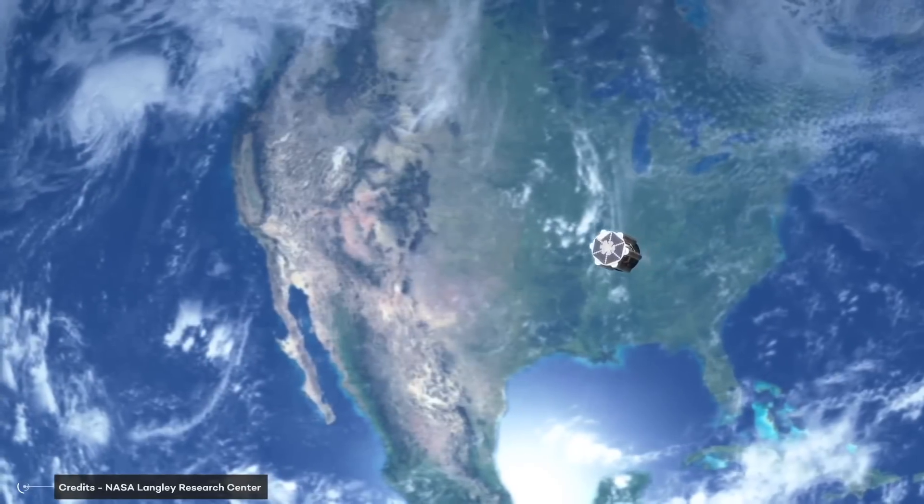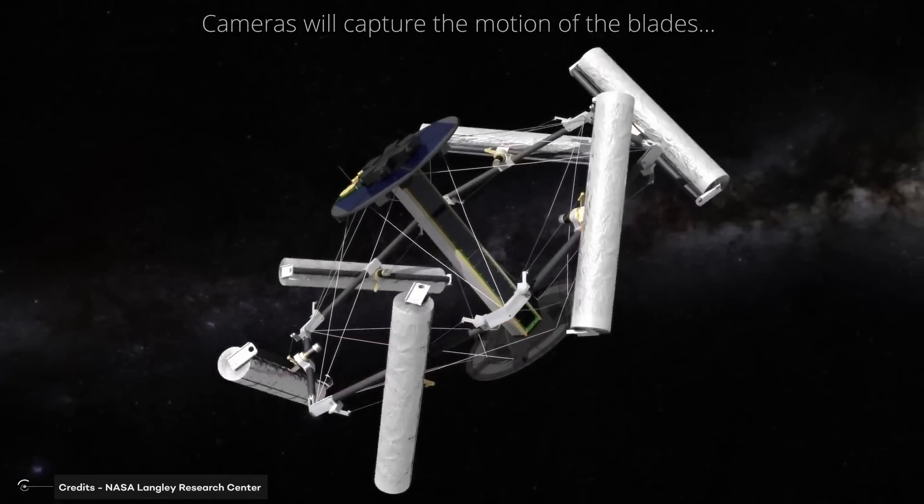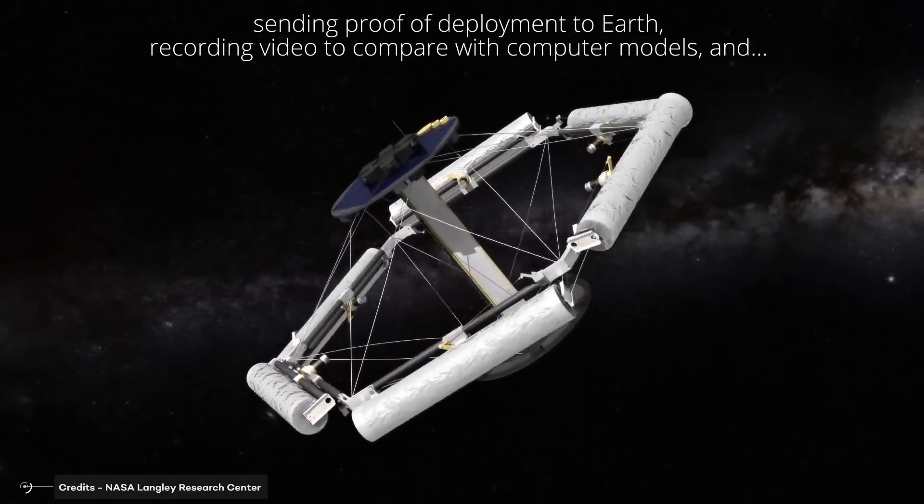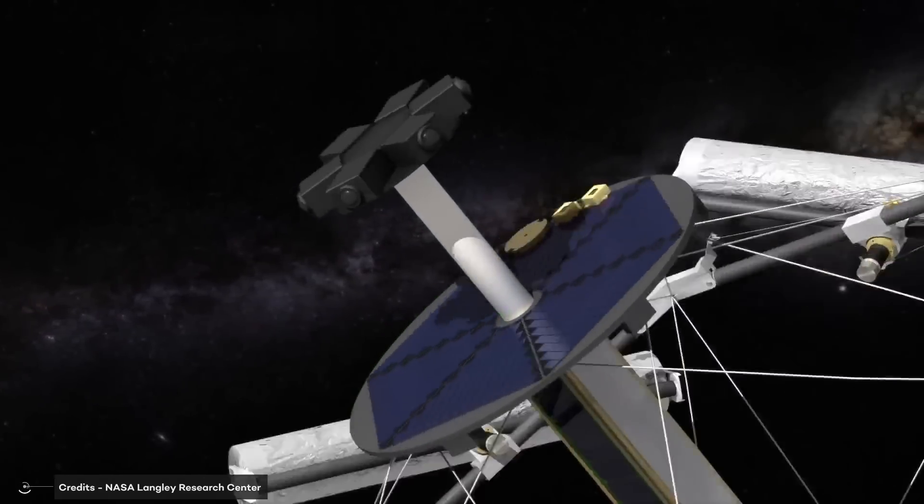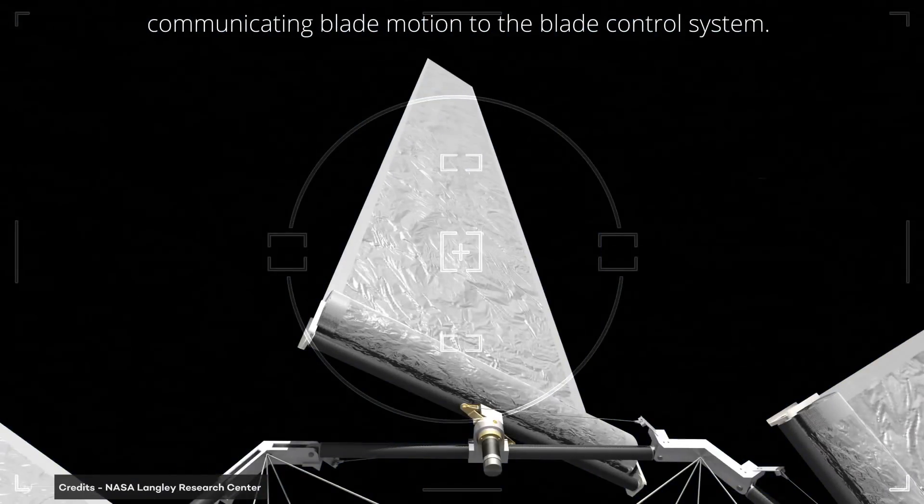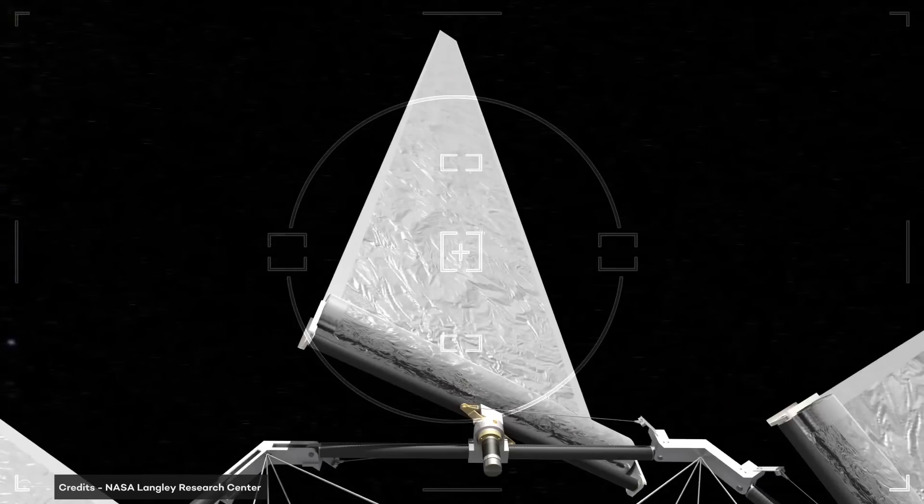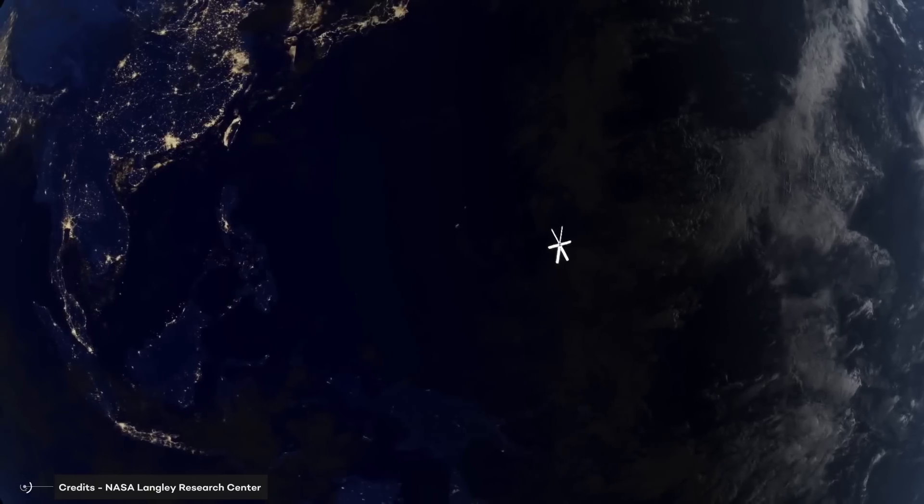The heliogyro design was initially considered by the Jet Propulsion Laboratory for a mission to Halley's Comet. The sail consists of several very long vanes extending from a central hub. The vanes are deployed from rollers by spinning the craft. The centrifugal force pulls the sail outwards, unrolling them. The vehicle continues to spin in order to keep the vanes tight. It steers by tilting the vanes, which redirects the solar pressure.